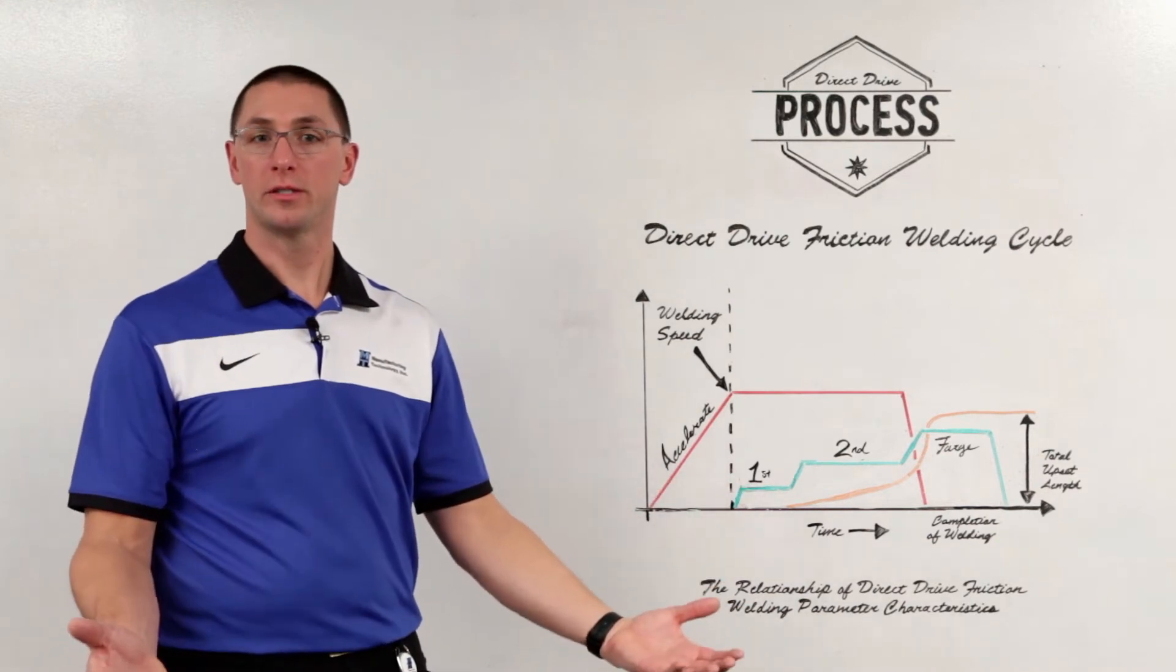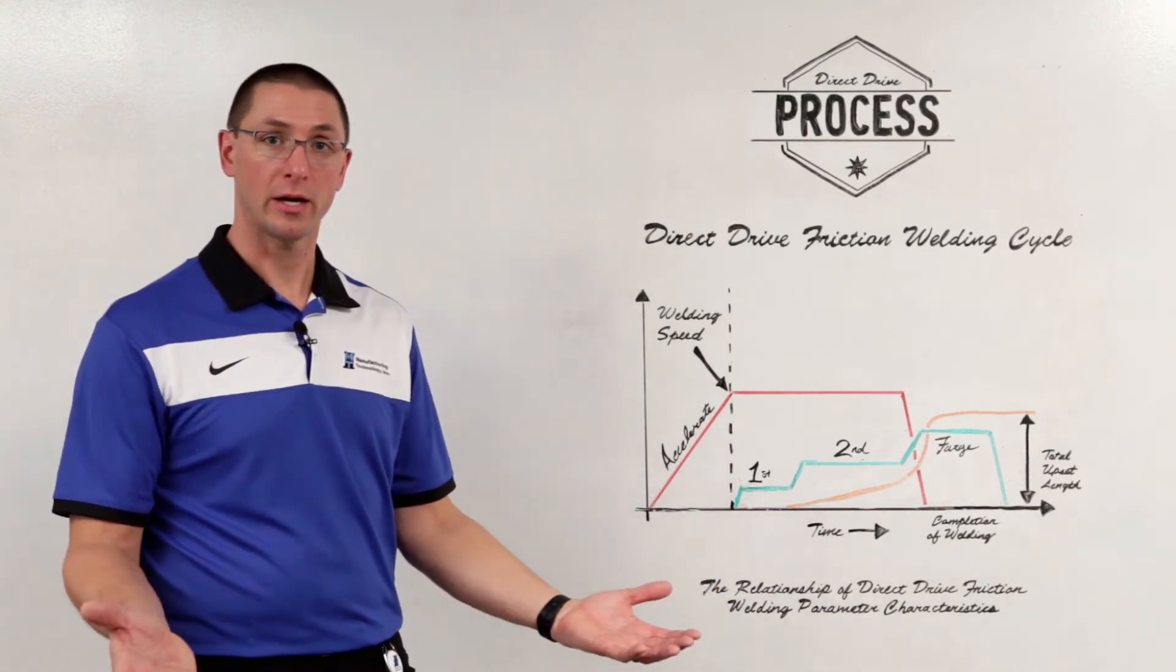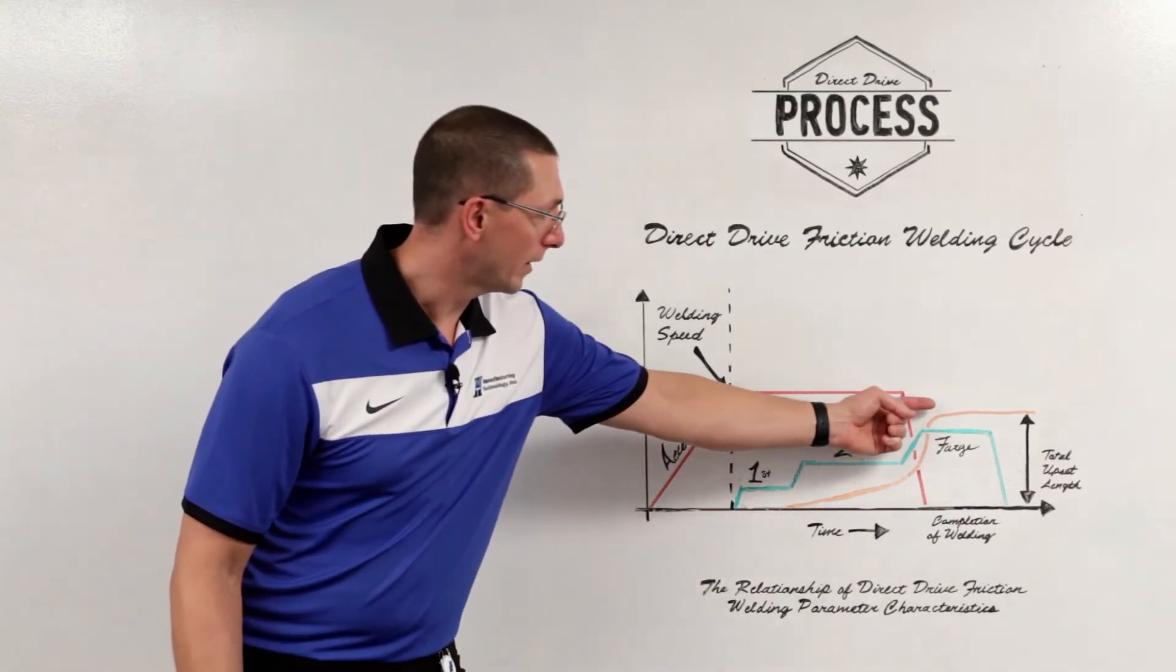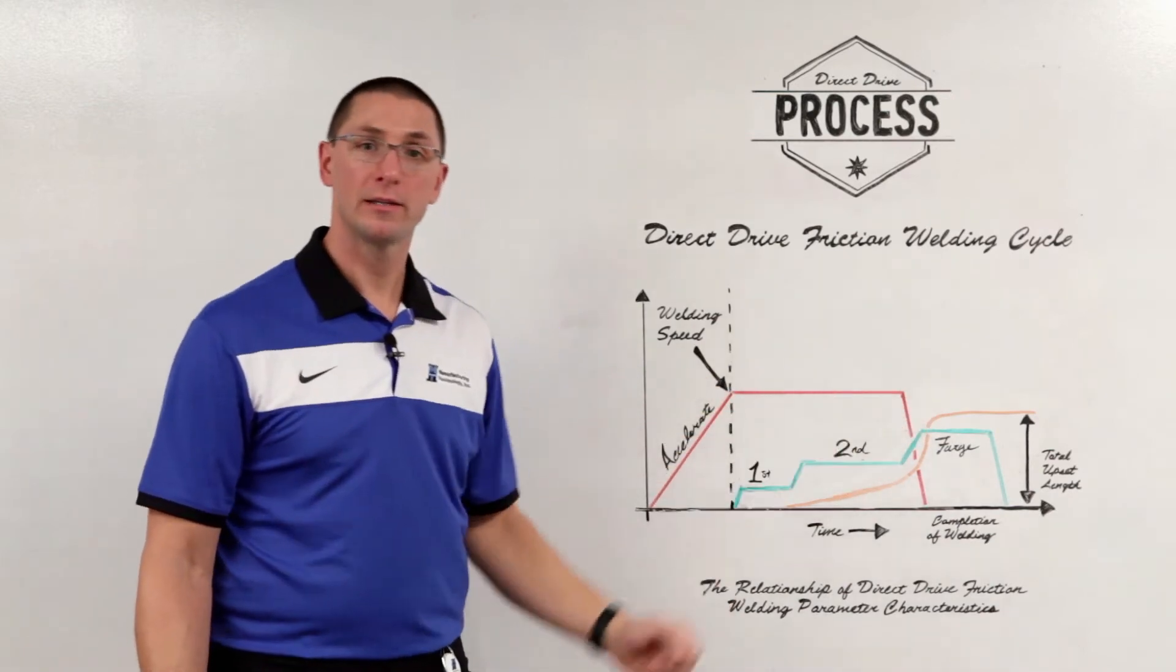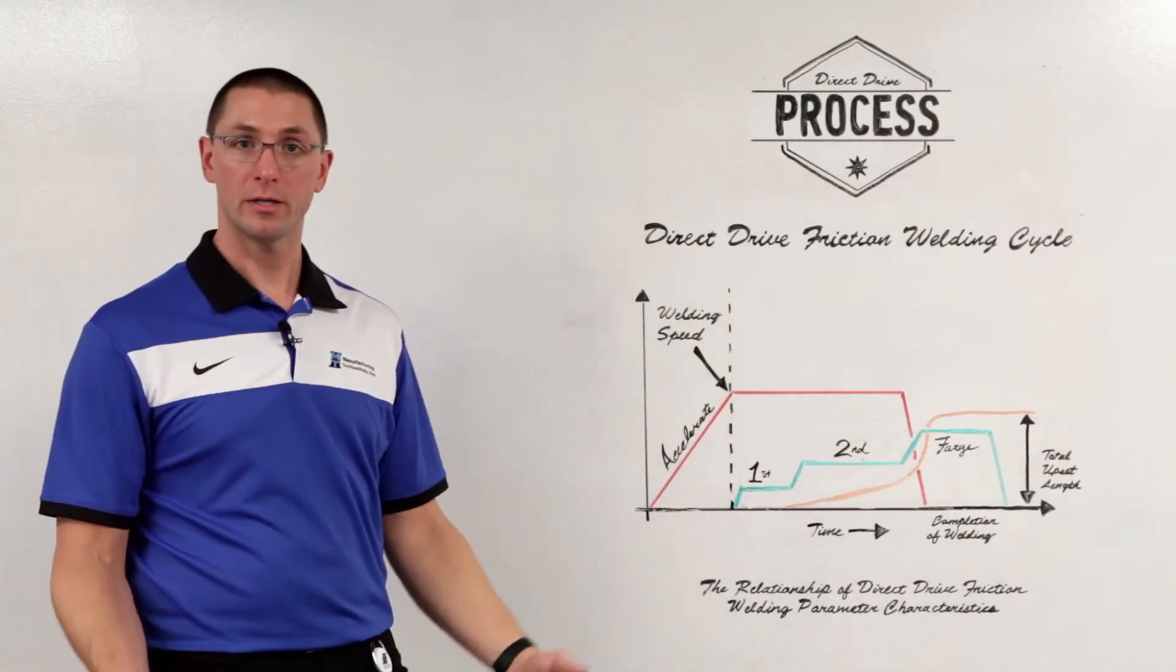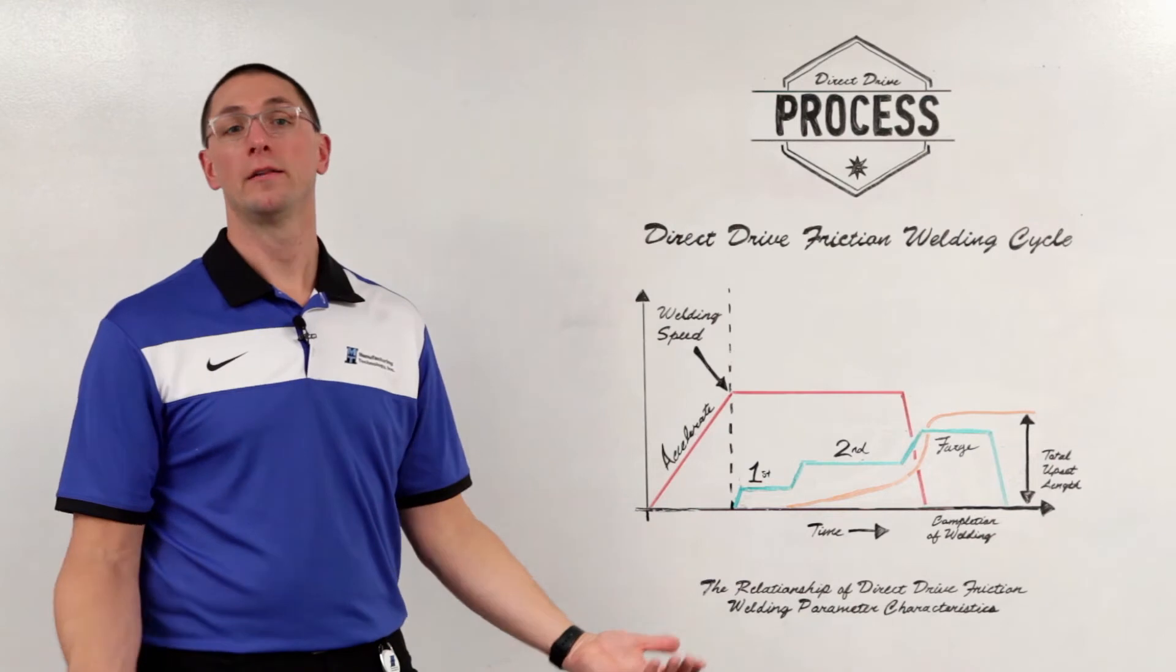At this point, all of the soft material that's at the weld line extrudes out as upset. We get to our final upset amount. We maintain that forge force for a certain amount of time to get a little bit of part cooling and then the weld is complete.